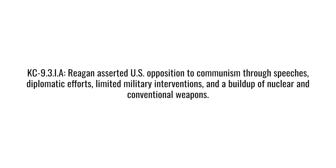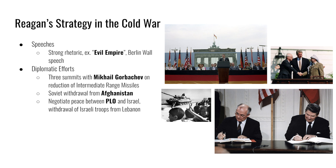The first of three key concepts covers Reagan's strategy in the Cold War. Reagan asserted US opposition to communism through speeches, diplomatic efforts, limited military interventions, and a buildup of nuclear and conventional weapons. This and the next slide will go through all the methods listed in the key concept, starting with speeches.